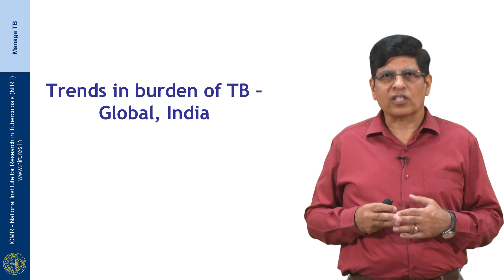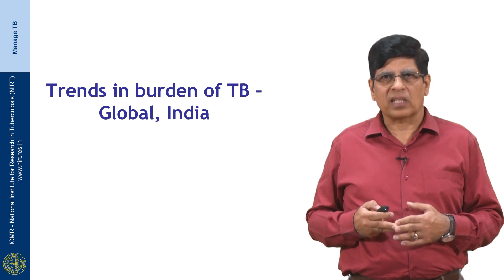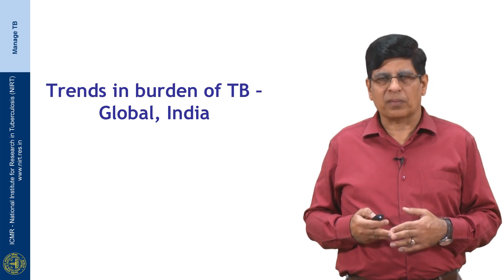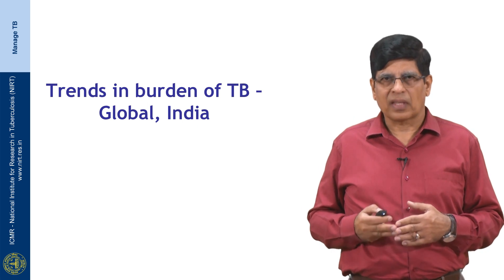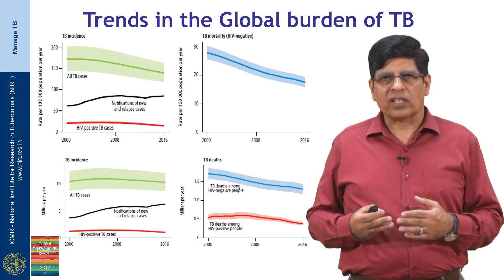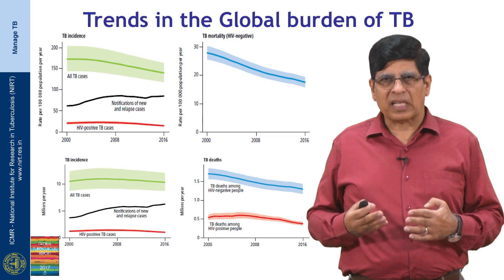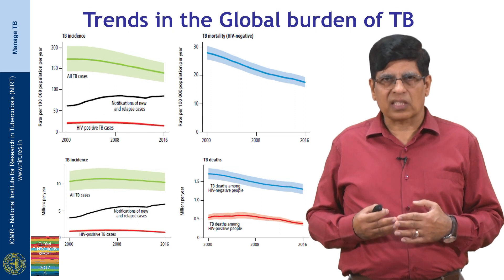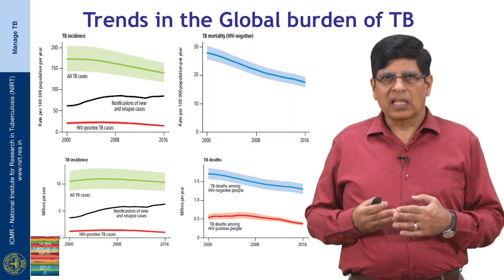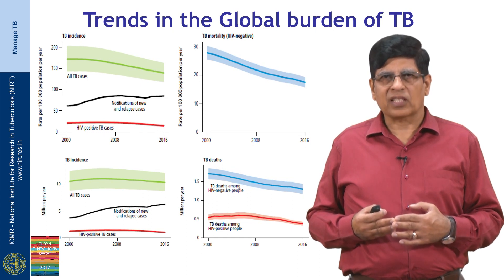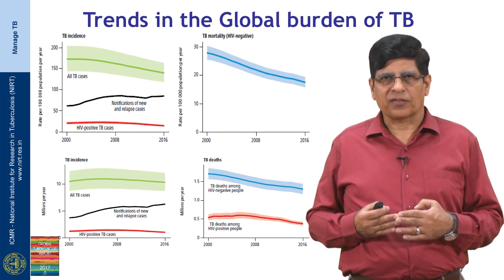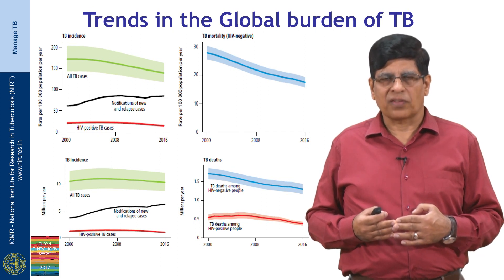Looking at trends in disease burden globally and in India, since the onset of DOTS-based disease control programs, both the incidence of TB and mortality have seen a significant decline over the last 15 to 17 years.